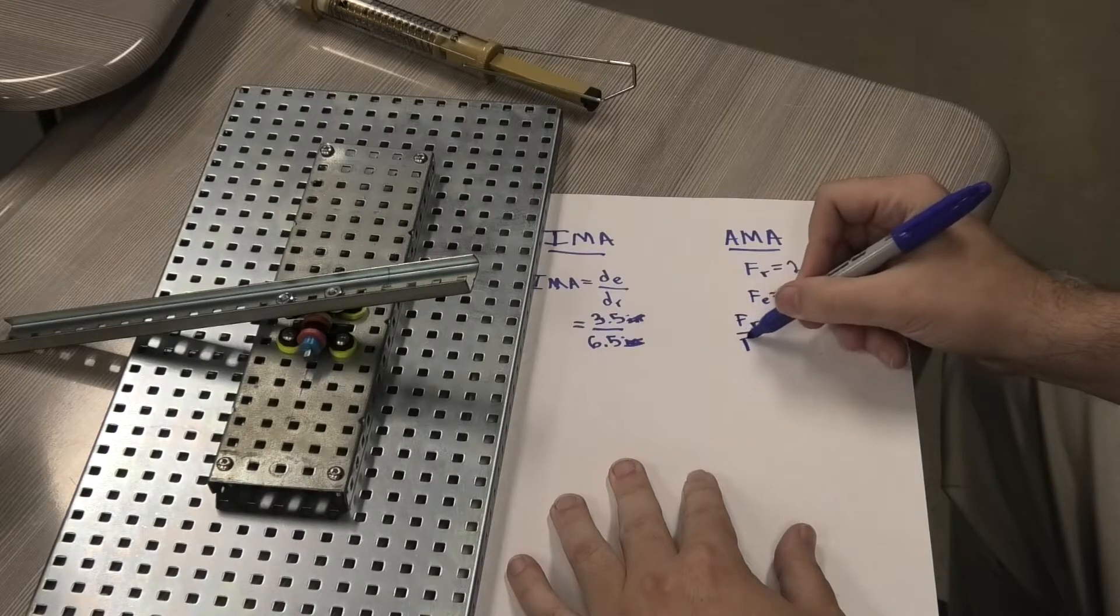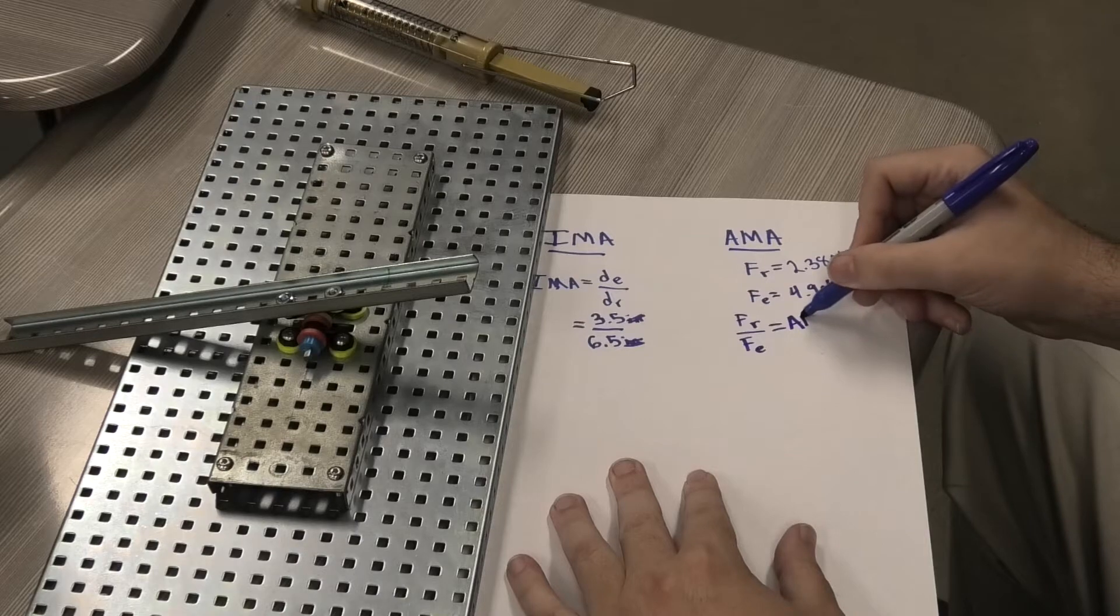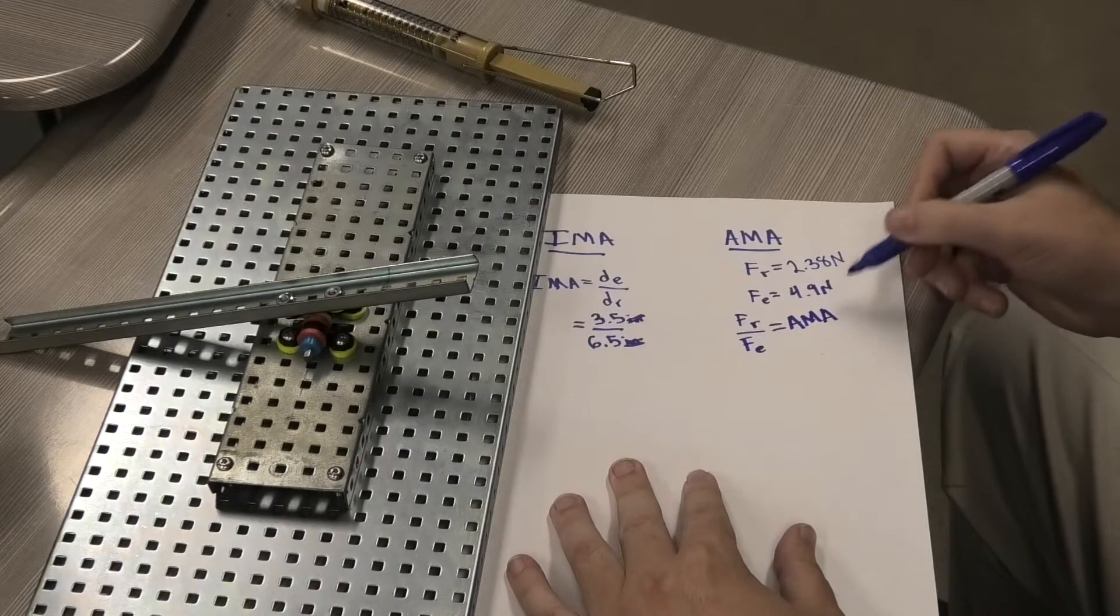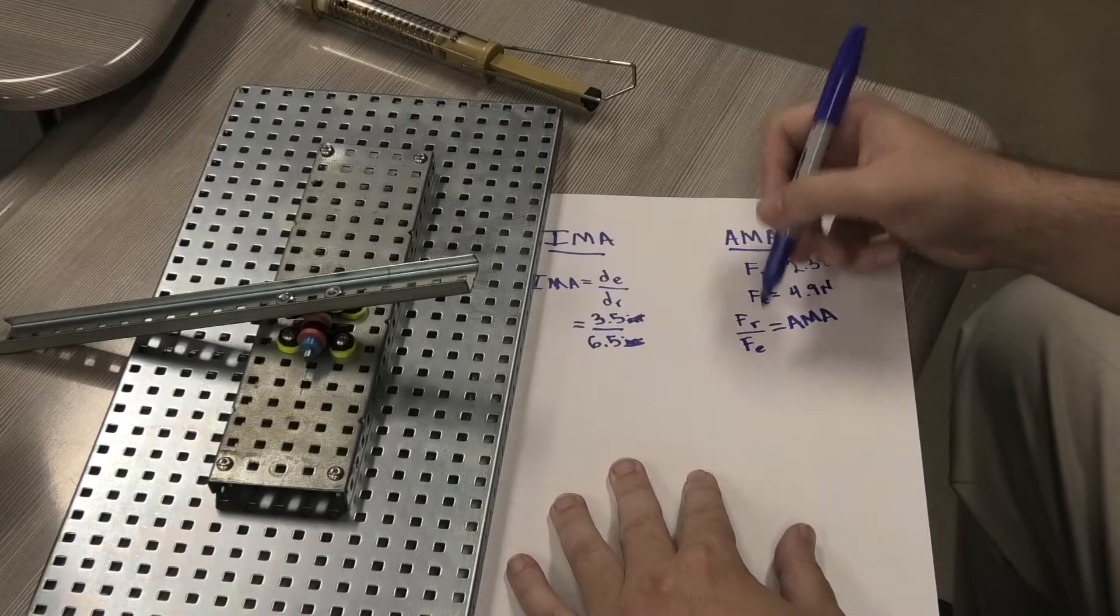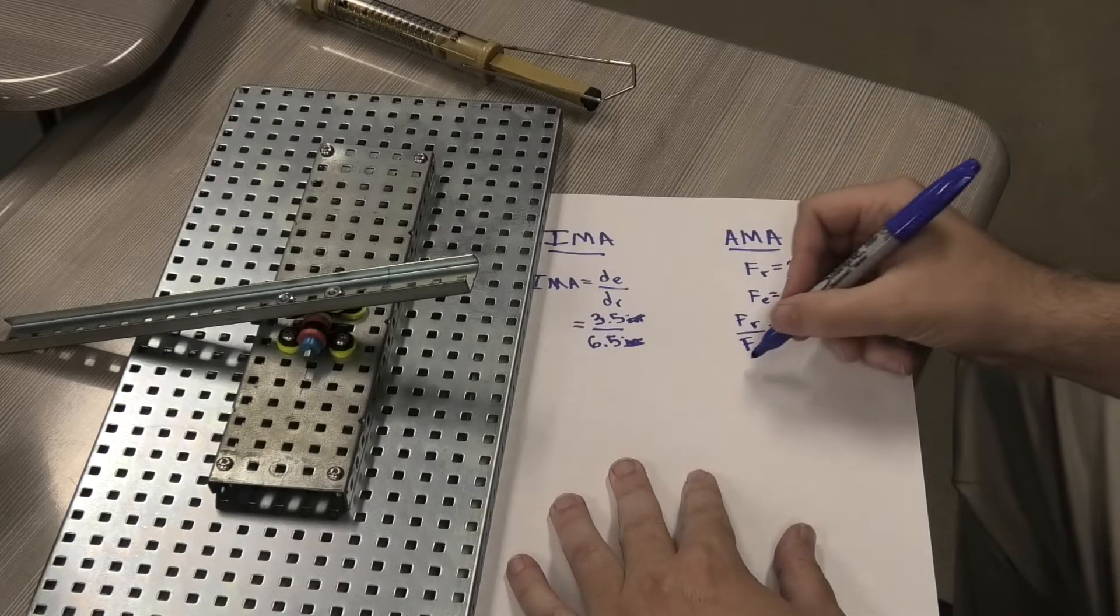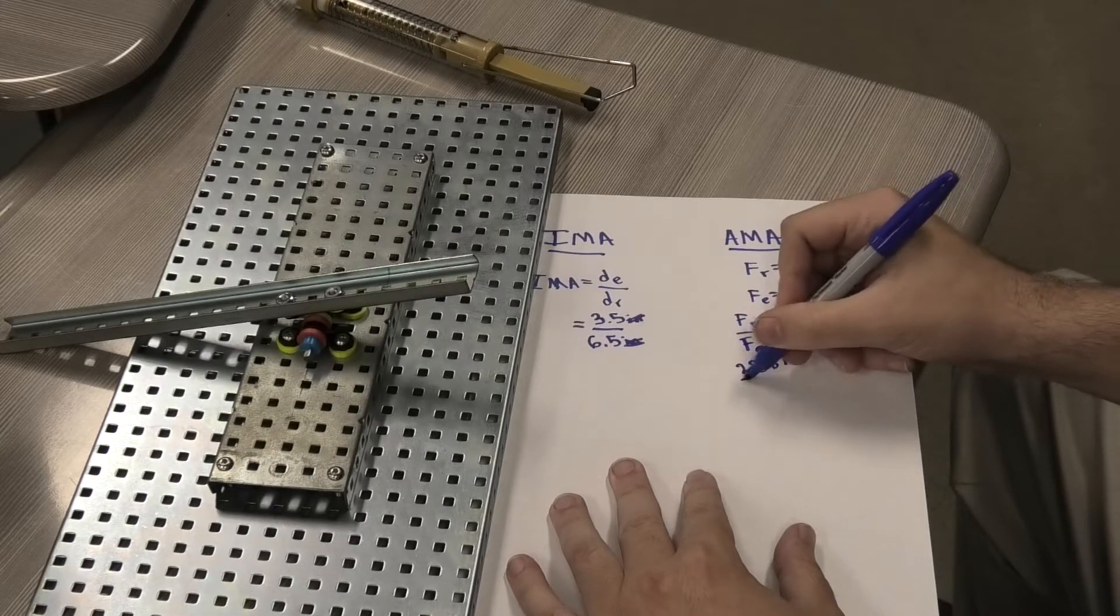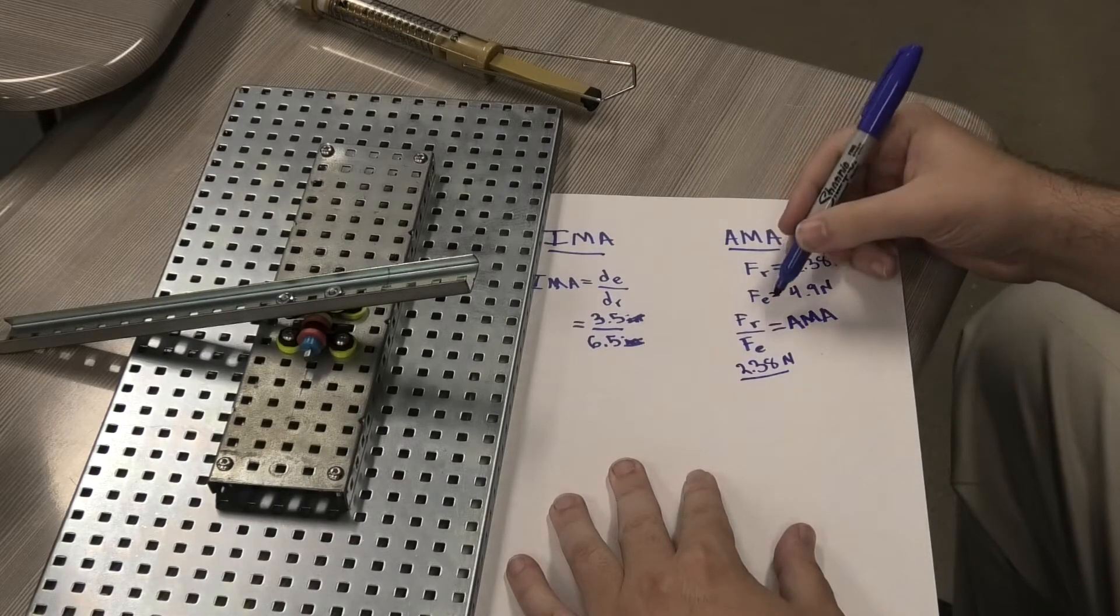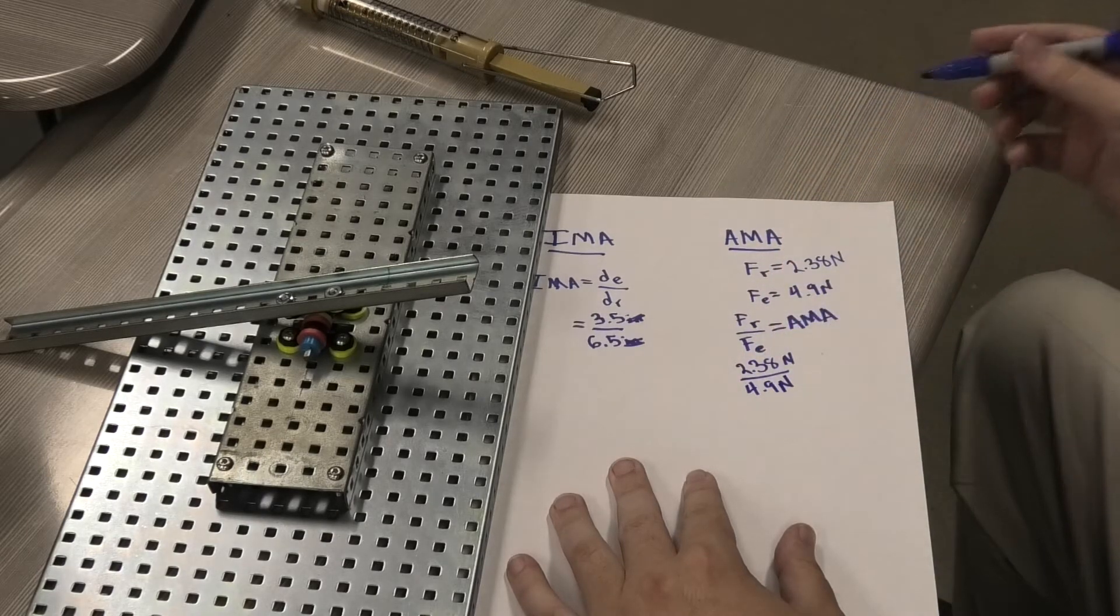FR over FE, because AMA will set you free, is equal to the actual mechanical advantage. So we're going to take those two numbers, the effort force and the resistance force, and we're going to divide them. That's going to be 2.38 Newtons divided by 4.9 Newtons.